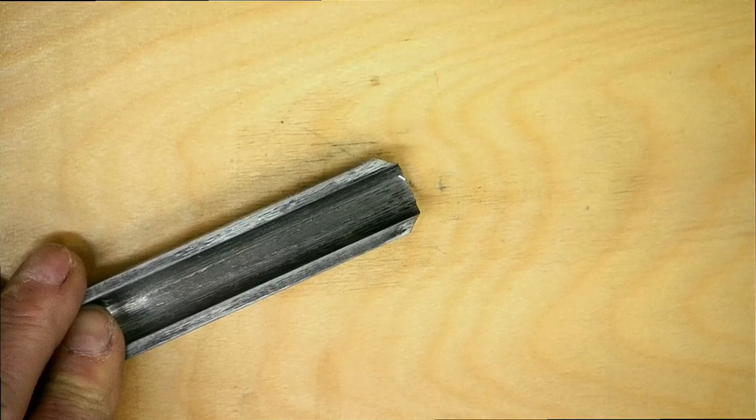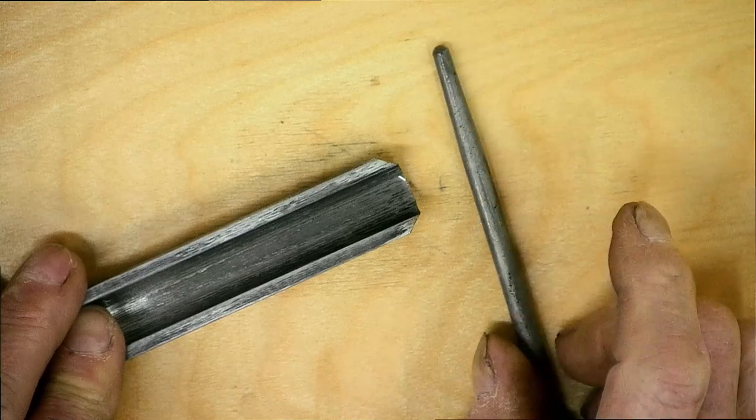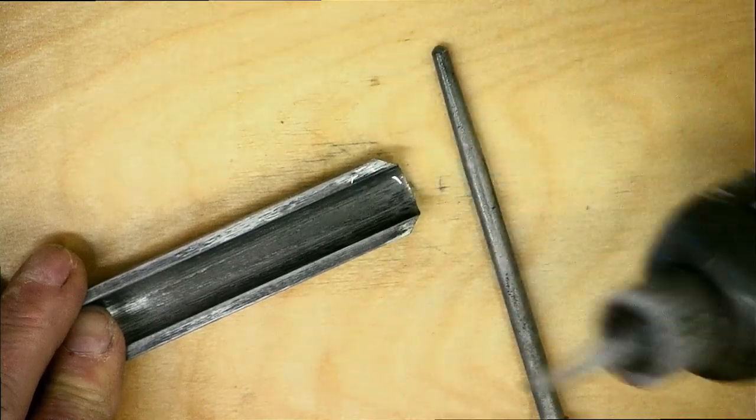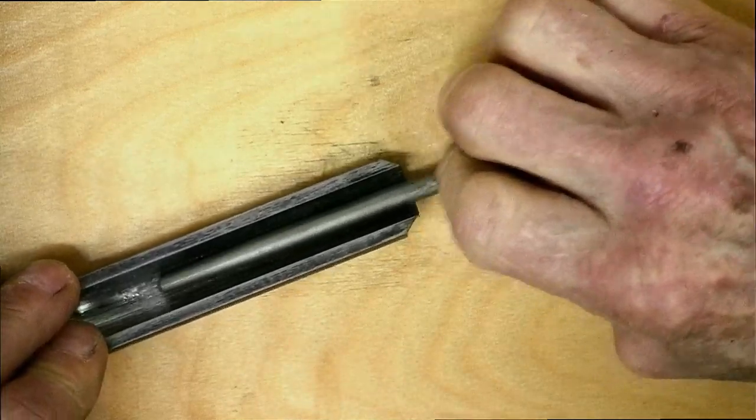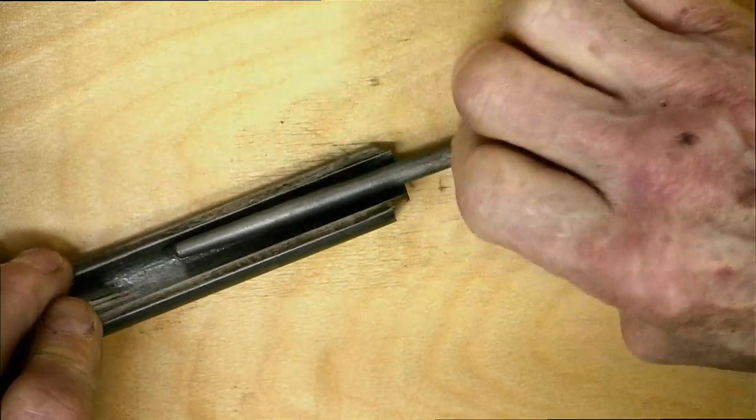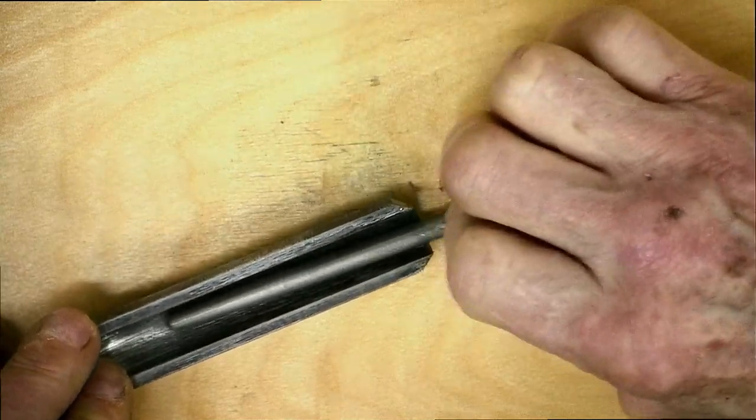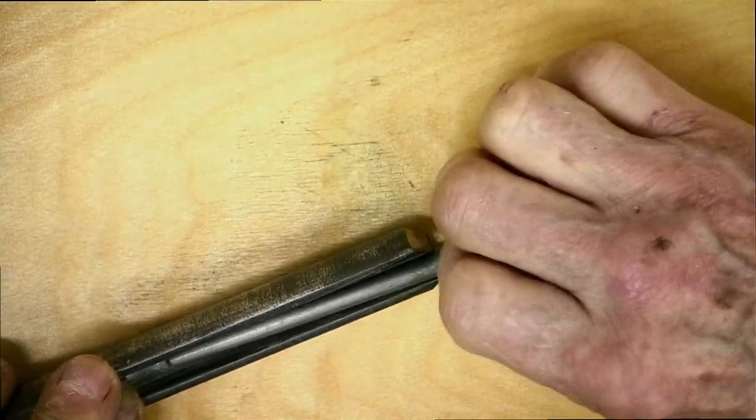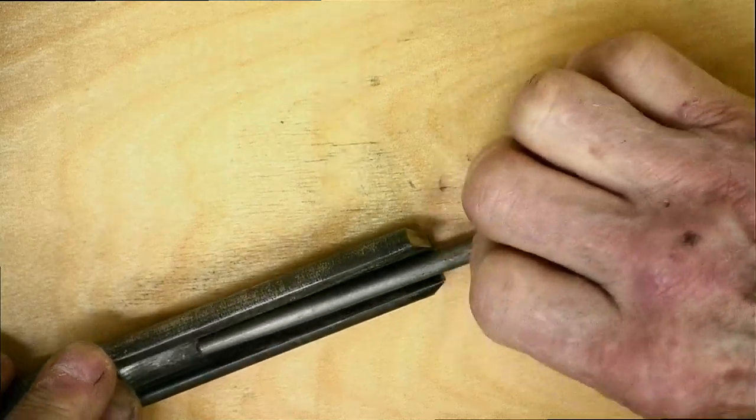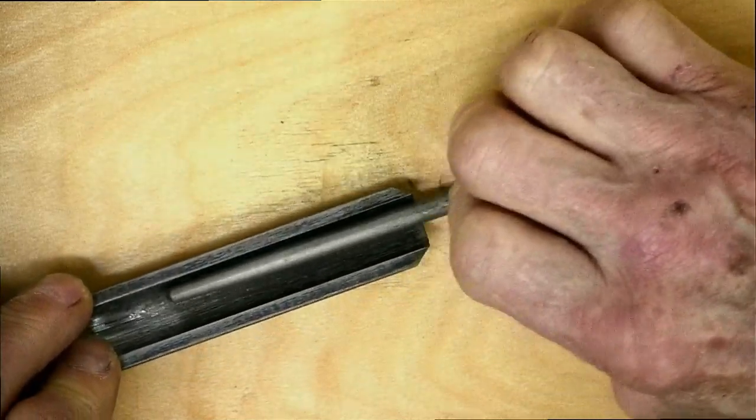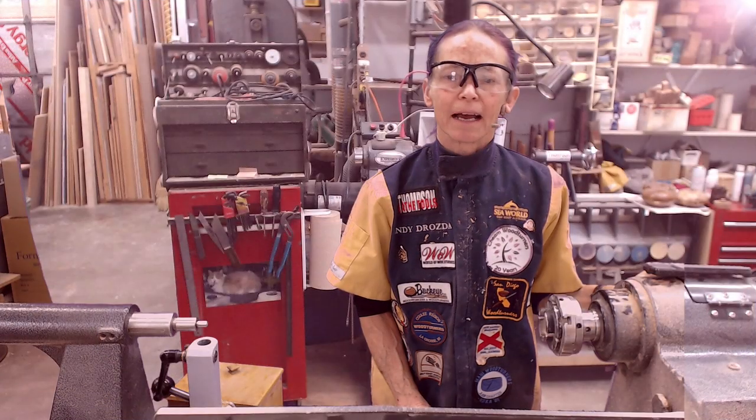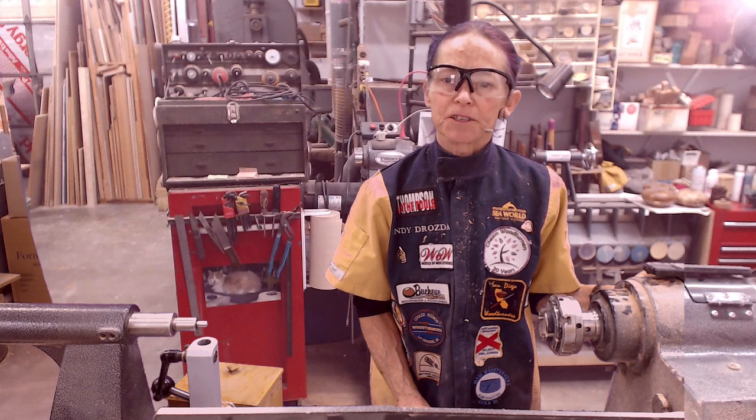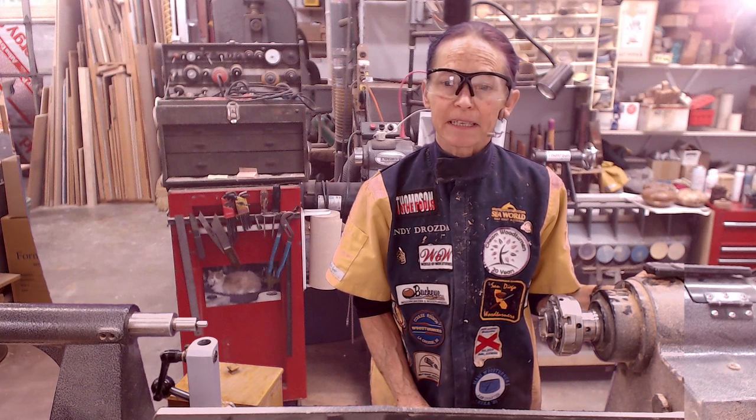I'll do the spindle roughing gouge also with the pen file. I'll drop a lapping fluid in there. I'm holding the file against the flute surface and rolling the tool so that I get the full edge honed right out of the tip mainly. I do think that honing the gouge flutes makes a difference in how sharp they get and how cleanly they cut.